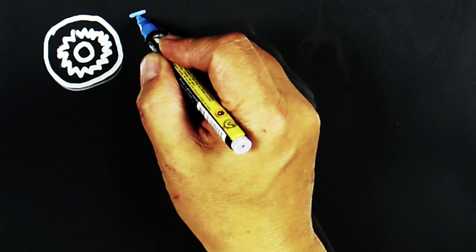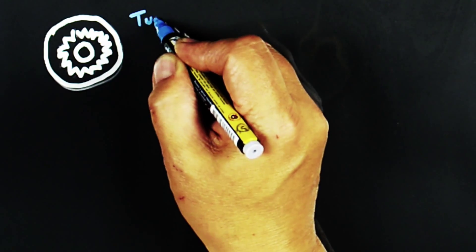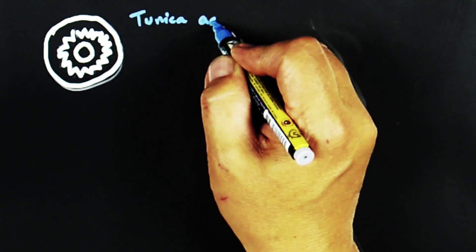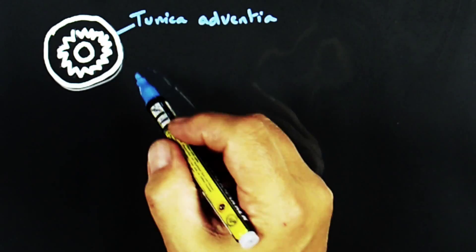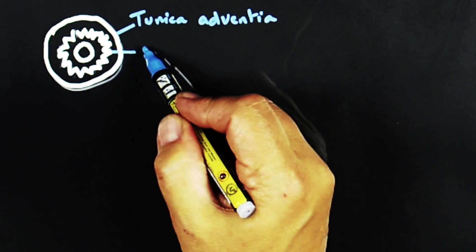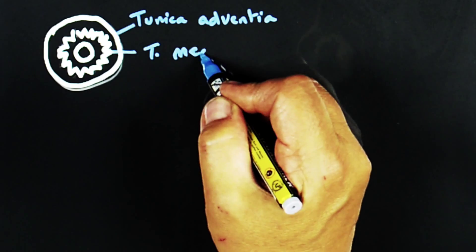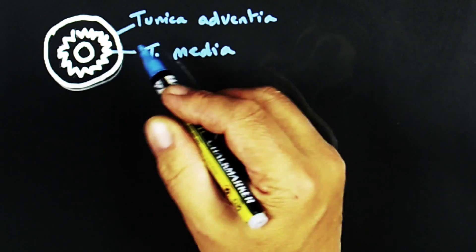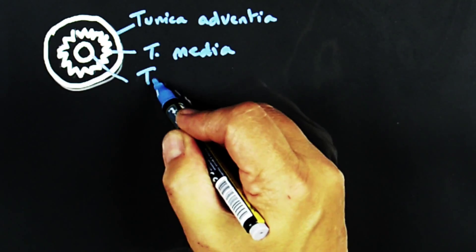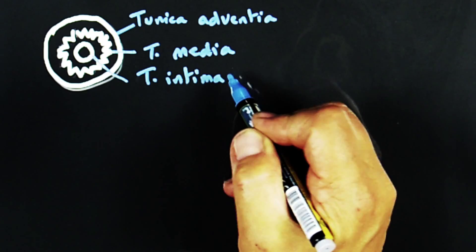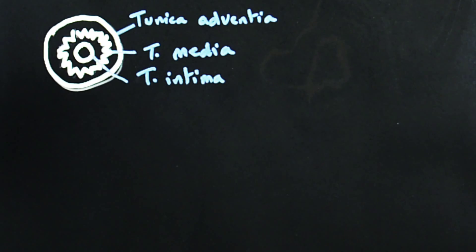So the arterial wall then has three basic layers: the outermost being the tunica adventitia, the middle layer the tunica media, which includes the zig-zag line of the elastic fibers, and the innermost layer, which has a fine endothelial lining, known as the tunica intima.